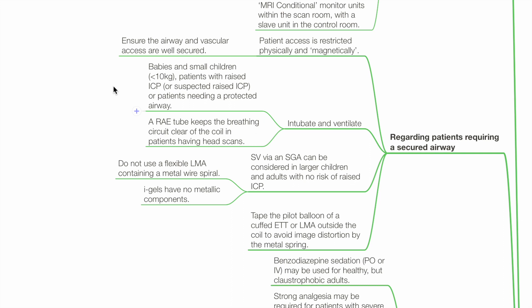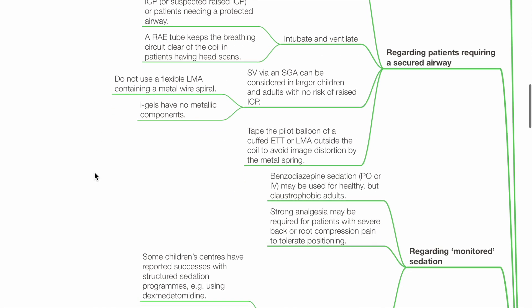Do not use a flexible LMA containing a metal wire spiral. Eye gels have no metallic components. Tape the pilot balloon of a cuffed ETT or LMA outside the coil to avoid image distortion by the metal spring.